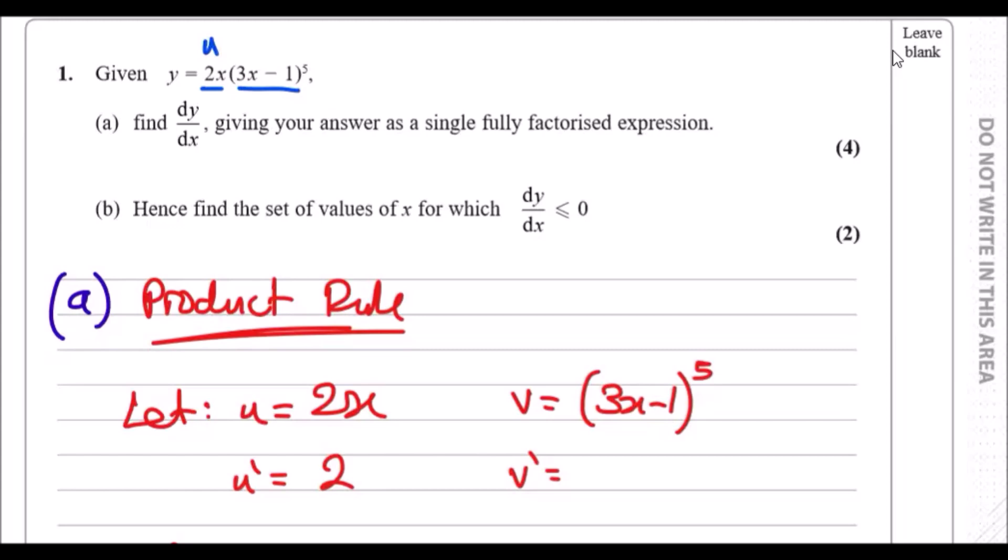To use the product rule, you pick one variable as u and the other as v. My u is 2x and my v is (3x-1)^5. Then you differentiate both - u prime means du/dx and dv/dx.